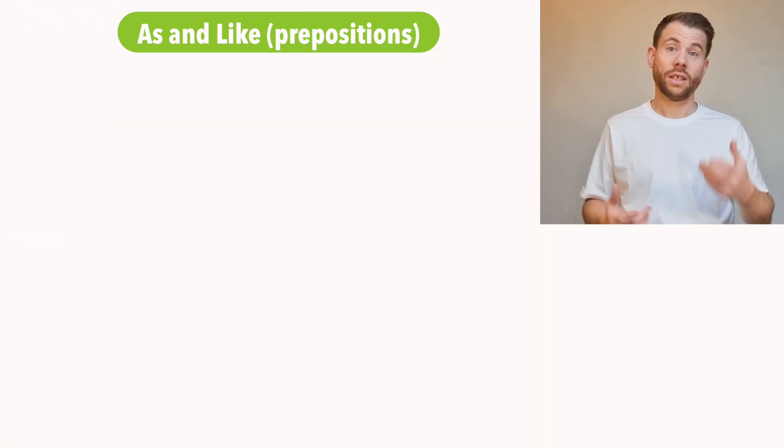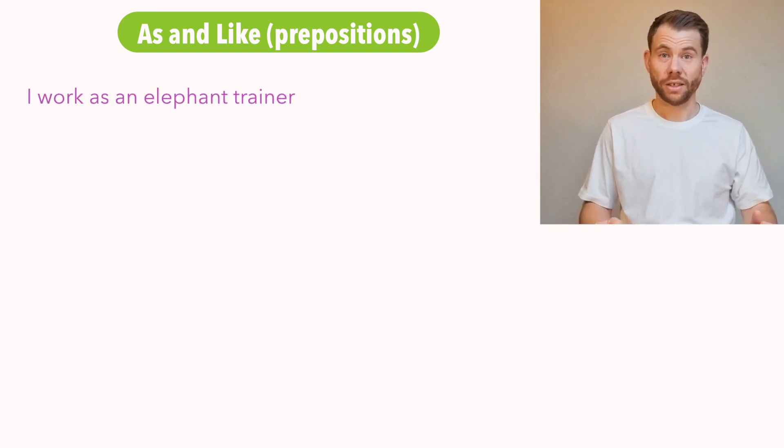The same logic applies for when you speak about your job. So if you speak about your job, you might say, I work as an elephant trainer. As, as a preposition followed by a noun, an elephant trainer is a noun, means in the role of. So if you say I work as an elephant trainer, you're saying I work in the role of an elephant trainer. It means you are an elephant trainer.